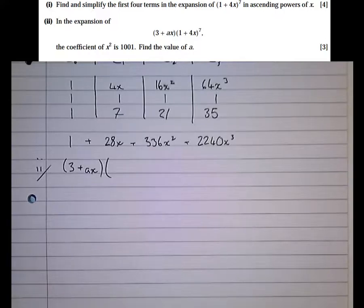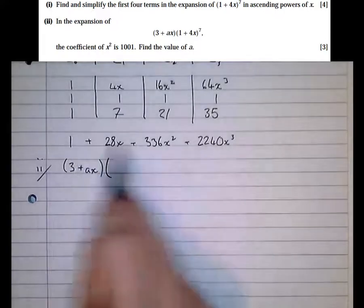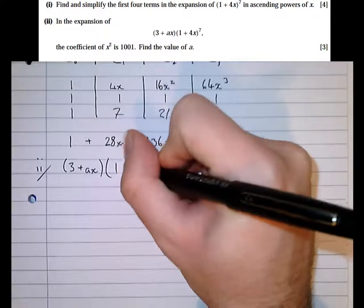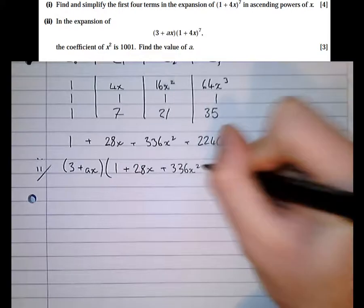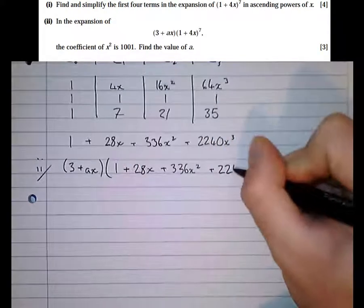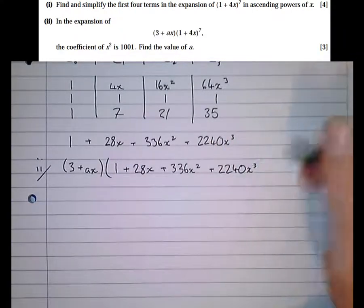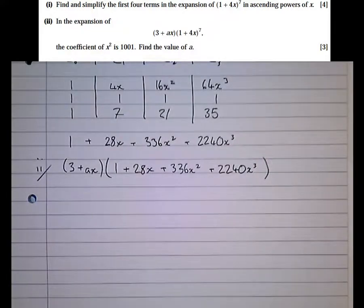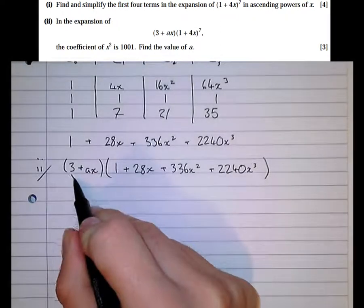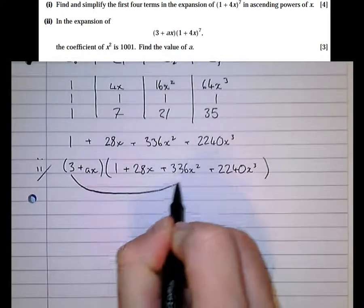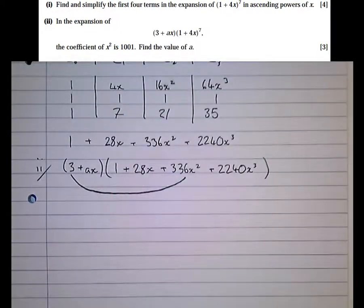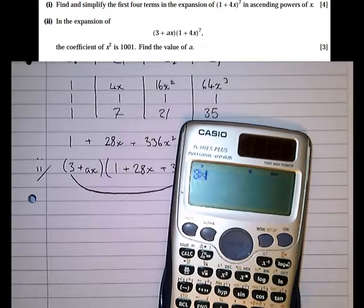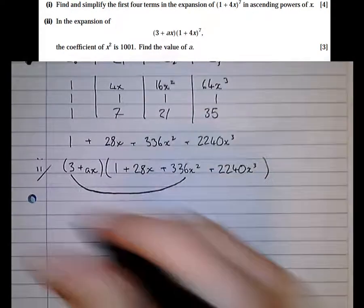So instead of writing 1 plus 4x to the power of 7, I'm going to use my expansion now: 1 plus 28x plus 336x squared plus 2240x cubed. And it says the coefficient of x squared is 1001. Well, the coefficient of x squared here, we get an x squared by times 3 by 336. 3 times 336 is 1008.